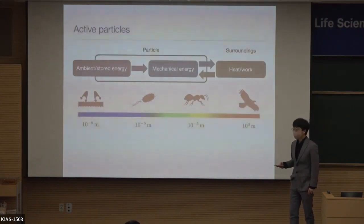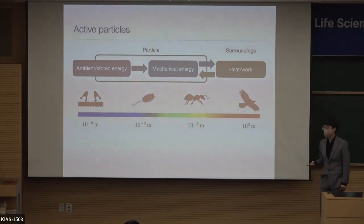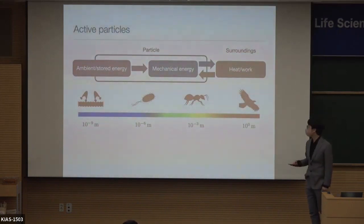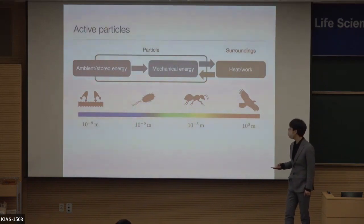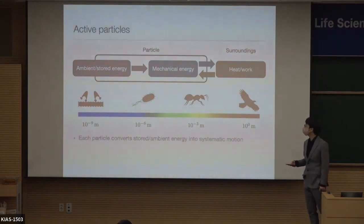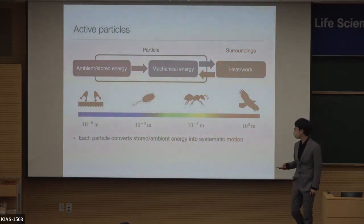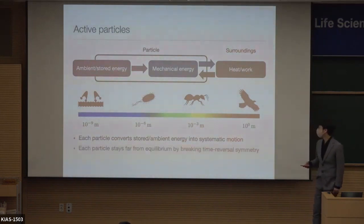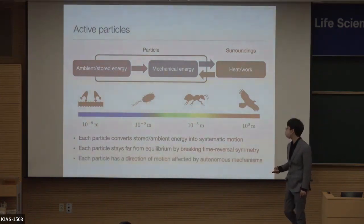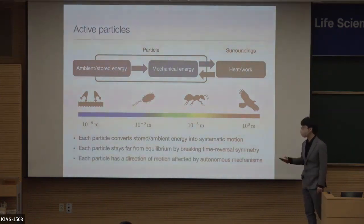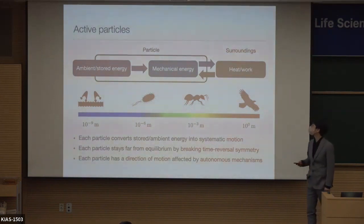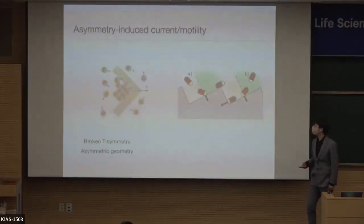You can find active particles at various length and time scales: from nanometer-scale molecular motors, through bacteria and insects, all the way to birds at larger scales. What these all have in common is that they convert ambient or stored energy into systematic motion, and they stay far from equilibrium by breaking the fluctuation-dissipation relation, with a direction of motion determined by their body shape.